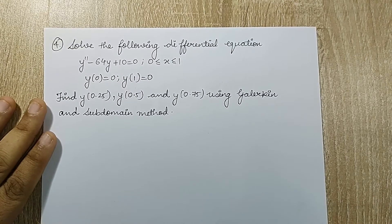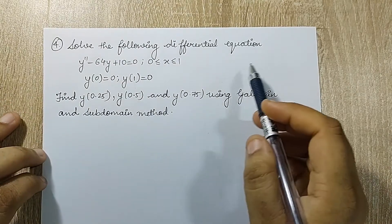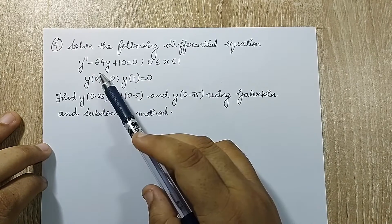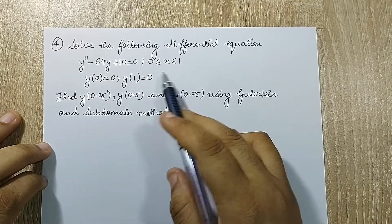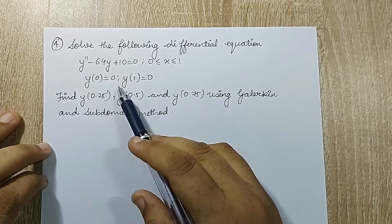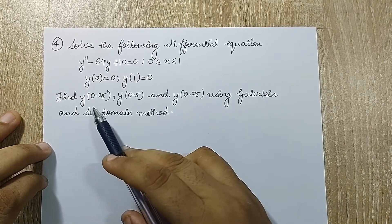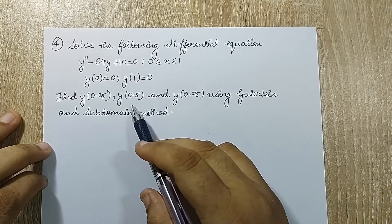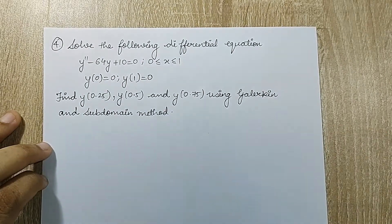Hello everyone, welcome to the next session of finite element analysis. I am solving question 4 of the weighted residue approach. Solve the following differential equation: y double dash minus 64y plus 10 is equal to 0. The domain for x is from 0 to 1. The two boundary conditions are y at 0 is 0 and y at 1 is 0. Find y at 0.25, 0.5 and 0.75 using subdomain and Galerkin method.